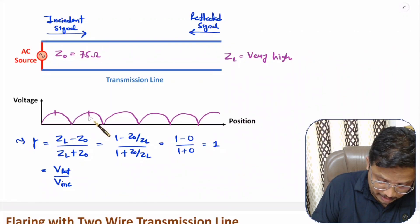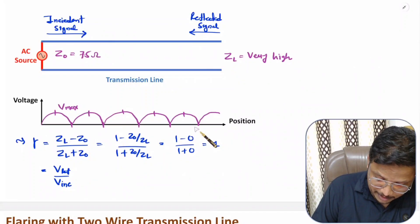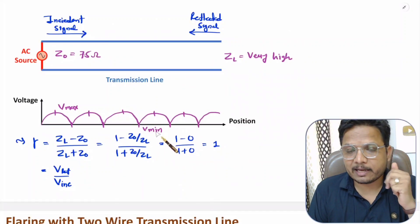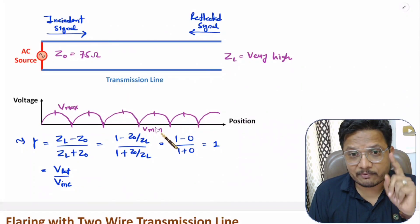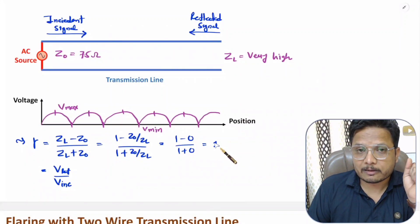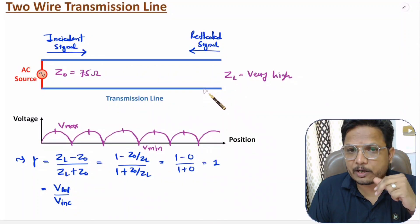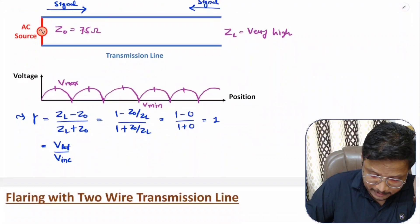At some positions you will observe Vmax voltage and at other locations Vmin voltage. Based on Vmax and Vmin we can identify the Voltage Standing Wave Ratio (VSWR), which will be infinite when the reflection coefficient equals 1. So with simply two straight wires, there is no radiation by the antenna.